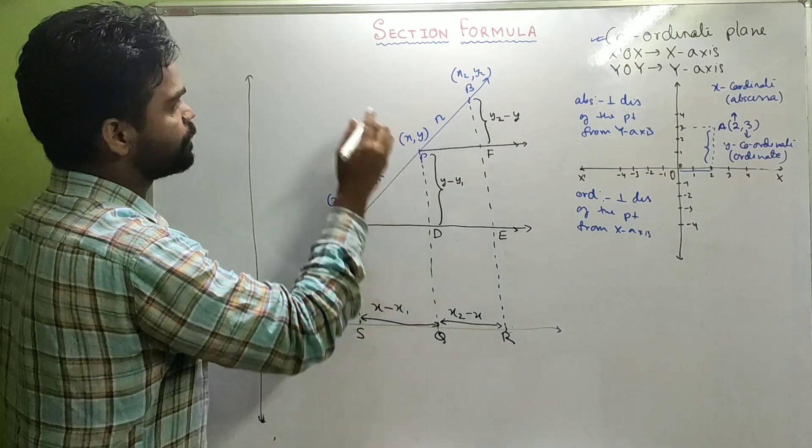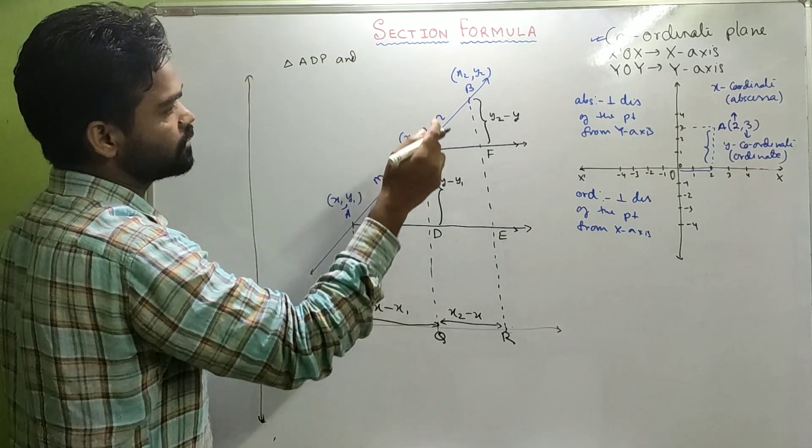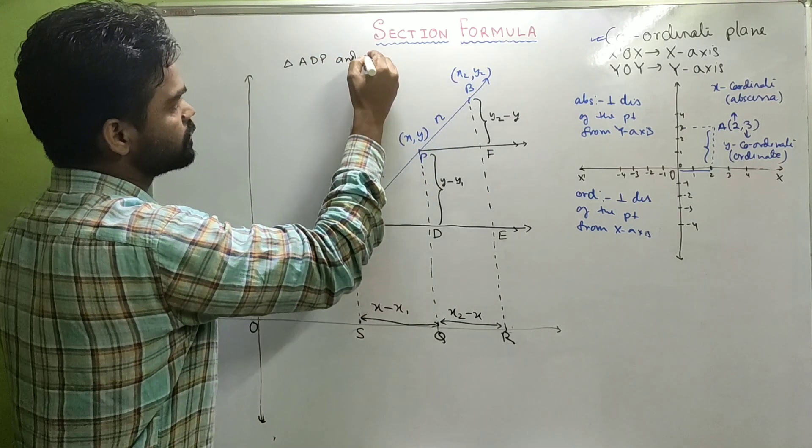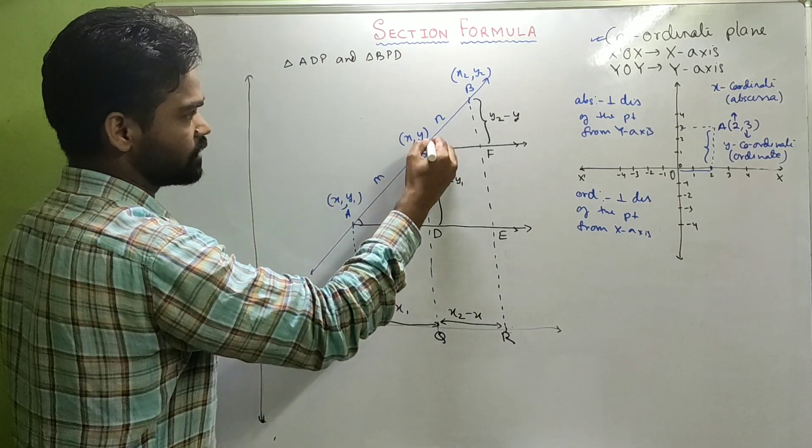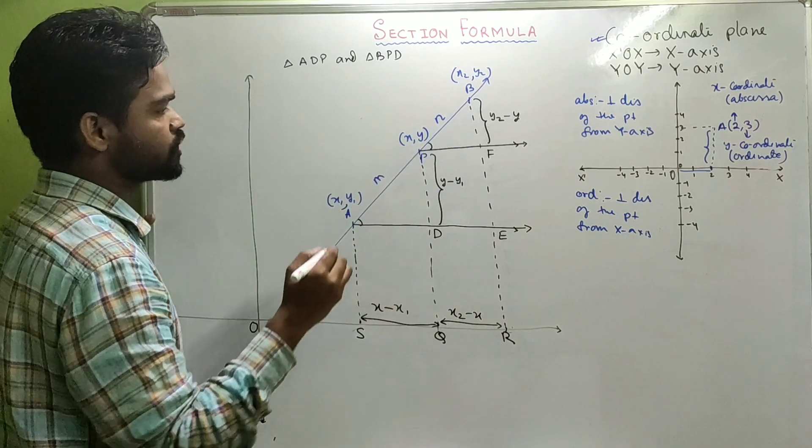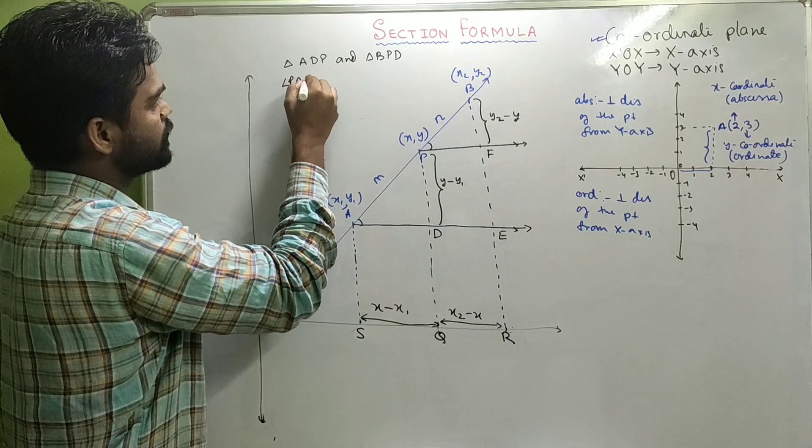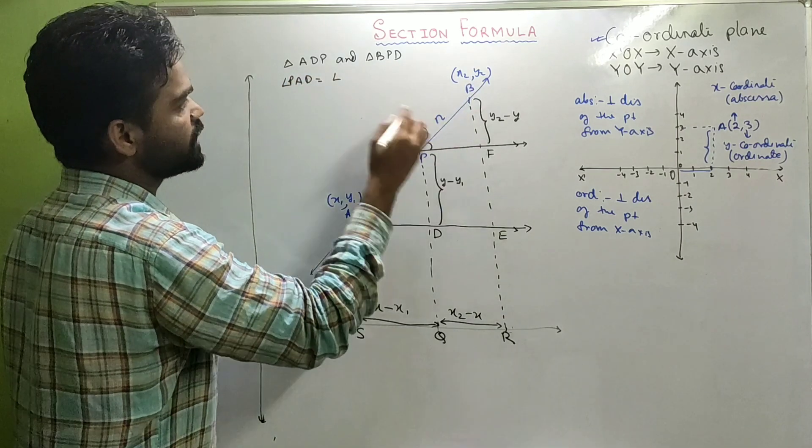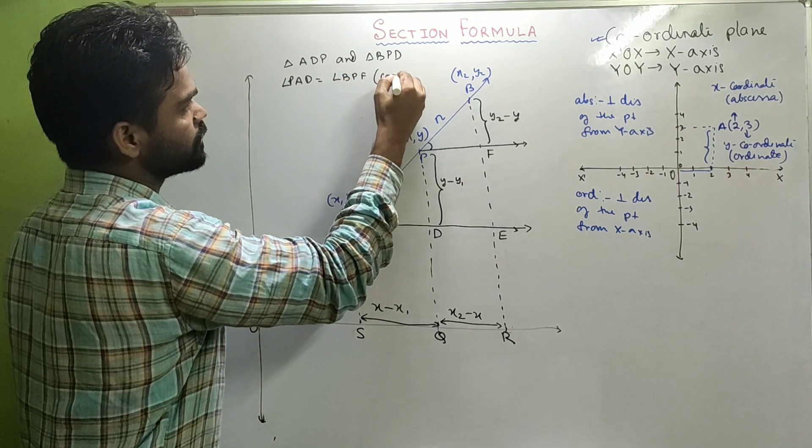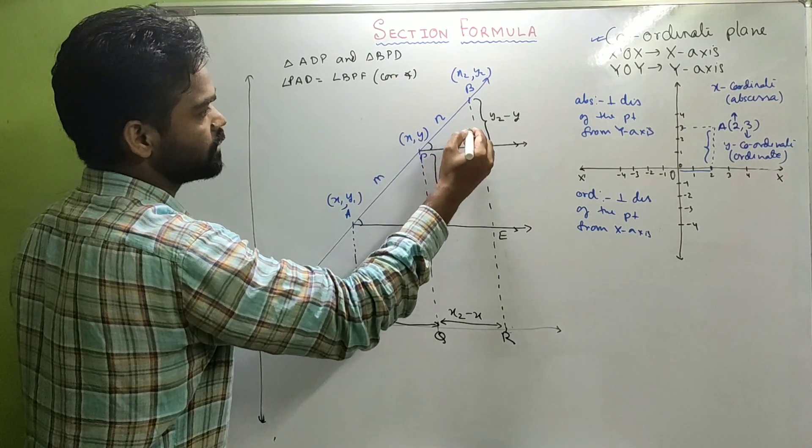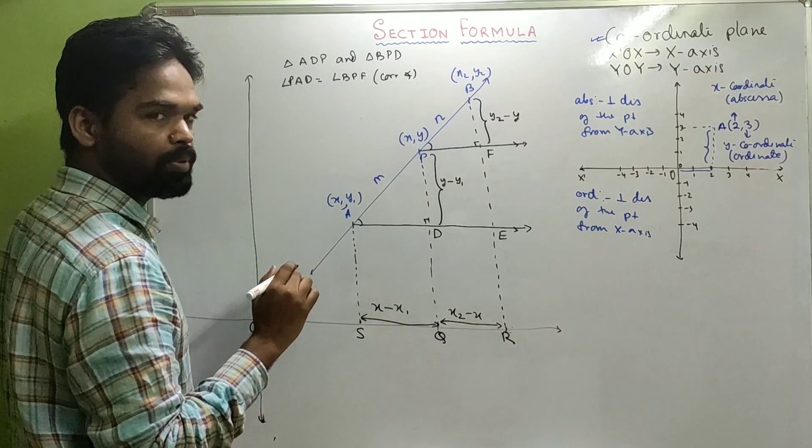Now look carefully. Triangle ADP and triangle BPF: this angle and this angle will be equal, corresponding. Angle PAD is equal to angle BPF, corresponding angles. Similarly, if you see, this angle and this angle are 90 degrees, since these perpendiculars meet the x-axis. Angle PDA is equal to angle BFP.